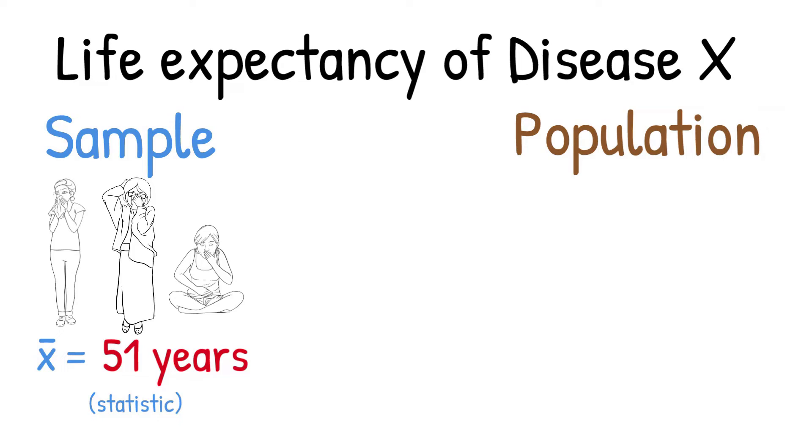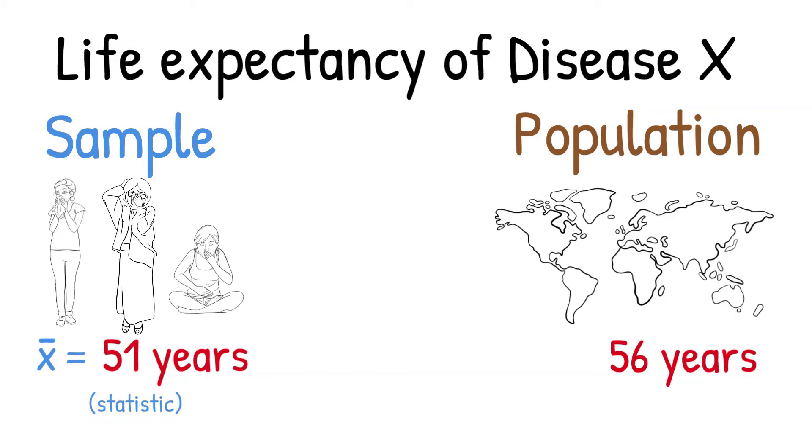But, let's imagine we know what the average life expectancy is for the population of Disease X. And this is 56 years. This measure, since it has come from the population, is known as a parameter. And the mean symbol for a parameter is Mu. Notice how the value for life expectancy in our sample is different to that of the actual population.